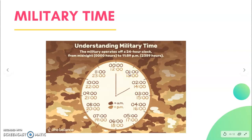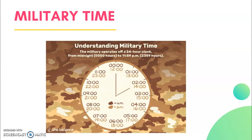The military time starts from zero — from midnight — and then goes 1, 2, 3 o'clock in the morning, up to 12. Then it continues: 13, 14, 15, and so on. If you want to convert, you can add 12. For example, if it's 5 PM — 5 plus 12 equals 17 in military time.